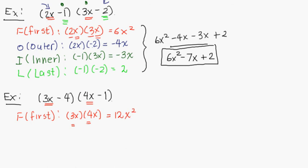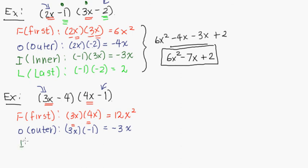Let's go to outer, which is the outer terms here. 3x times negative 1, which is simply negative 1 times 3, which is negative 3, times x. And then inner, which is the inside terms here. So that's negative 4 times 4x. That's equal to negative 4 times 4, which is negative 16, because there's only one negative sign, times x.